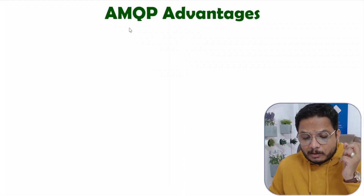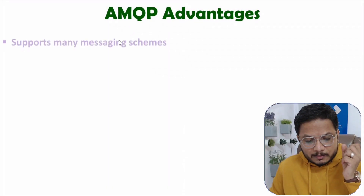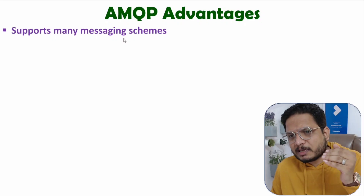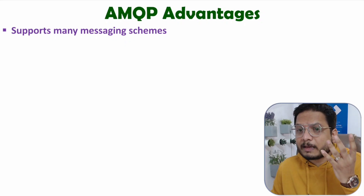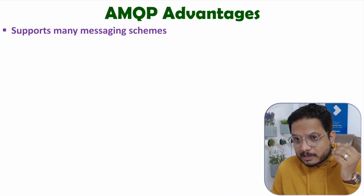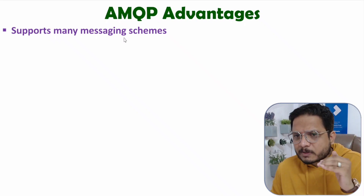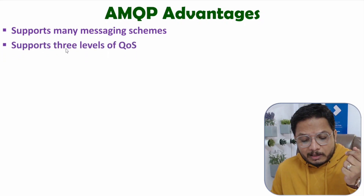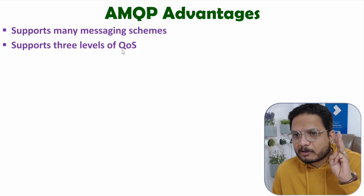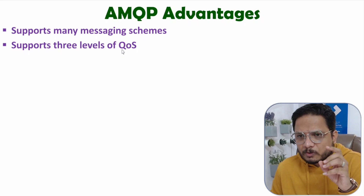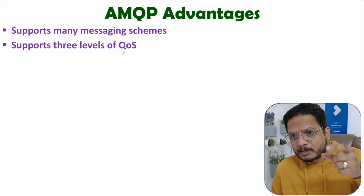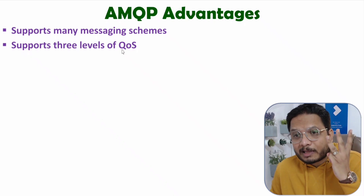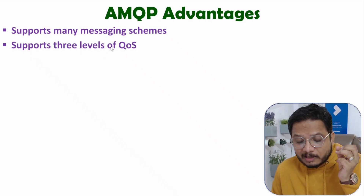Now let us discuss AMQP advantages. It supports many messaging schemes — there are four types of exchanges in the protocol, supporting different messaging schemes useful in IoT as well. It also supports three levels of quality of service: first, message without confirmation; second, message with confirmation; and third, message with double confirmation.